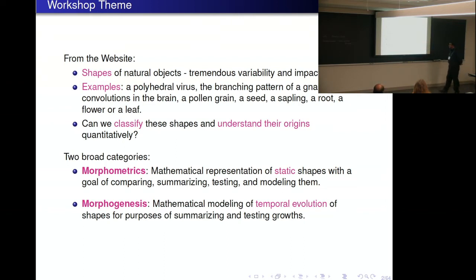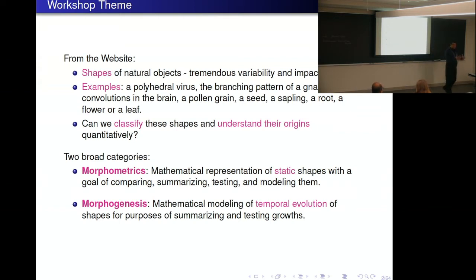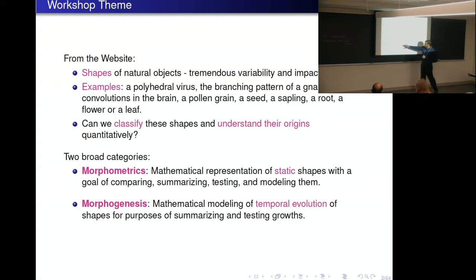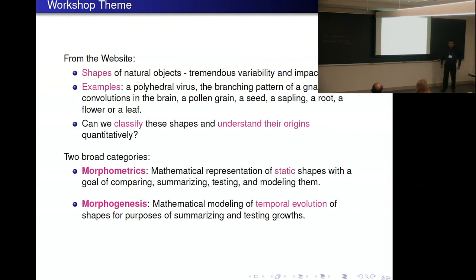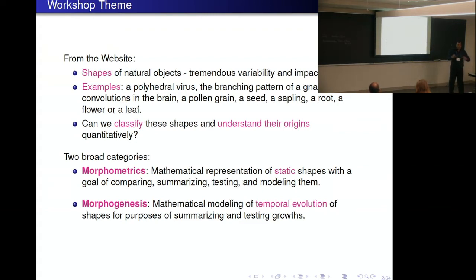There are two broad categories in the title of the workshop. Morphometrics, as I interpret it, is interested in shapes as static things — individual shapes at one time. The goal is how to compare shapes for classification. But coming from statistics, I take a statistical perspective: not only compare shapes, but do so from a statistical point of view. Is the difference statistically significant? Not just comparing two shapes, but comparing two populations of shapes from their samples — testing, summarizing, and modeling.